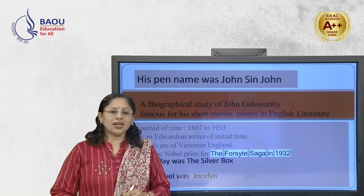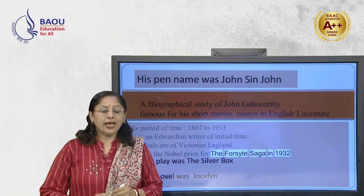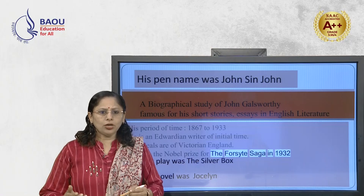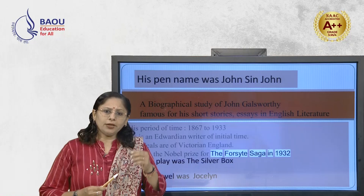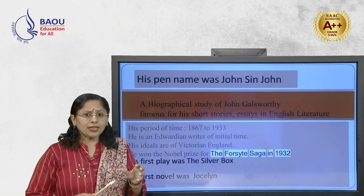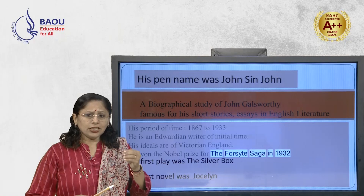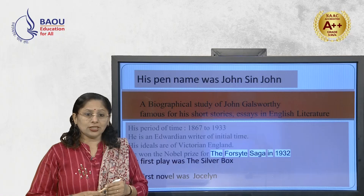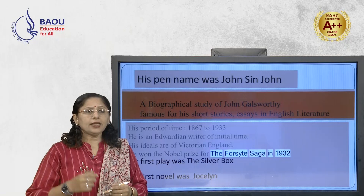First of all, we are supposed to understand the general information regarding John Galsworthy as an essayist, as a short story writer, as a man of literature, as a very popular famous personality in the history of English literature. His pen name — his real name is John St. John — and we are going to discuss a biographical study, his own study as Galsworthy as a man of English literature, famous for his short stories and essays.